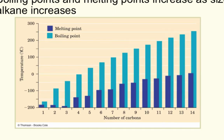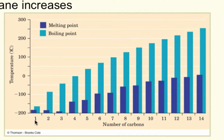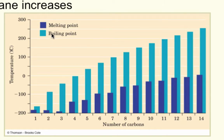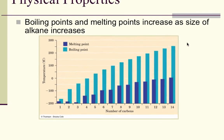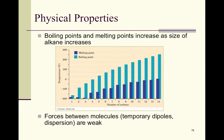As molecular weight increases, boiling points and melting points increase. This graph shows the number of carbons on the x-axis. Melting point has a slight dip at 3 carbons but shows a pretty steady increase with molecular weight. Boiling points show a very steady increase with molecular weight. Any forces between these molecules are temporary — they could be dipoles or dispersion forces — and they are weak.